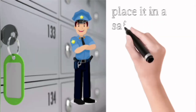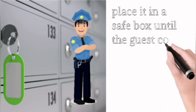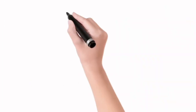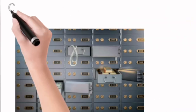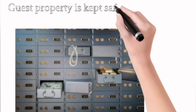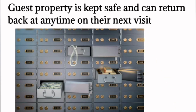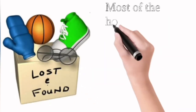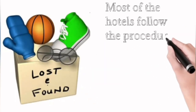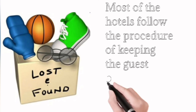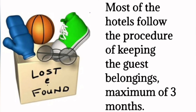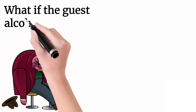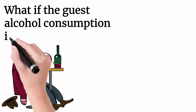The head waiter or supervisor must record the date and time the article was found with a full description and hand it over to the security department. They will place it in a safe box until the guest returns to collect their belongings. In this way, guest property is kept safe and can be returned at any time. Most hotels follow the procedure of keeping guest belongings for a maximum of three months.